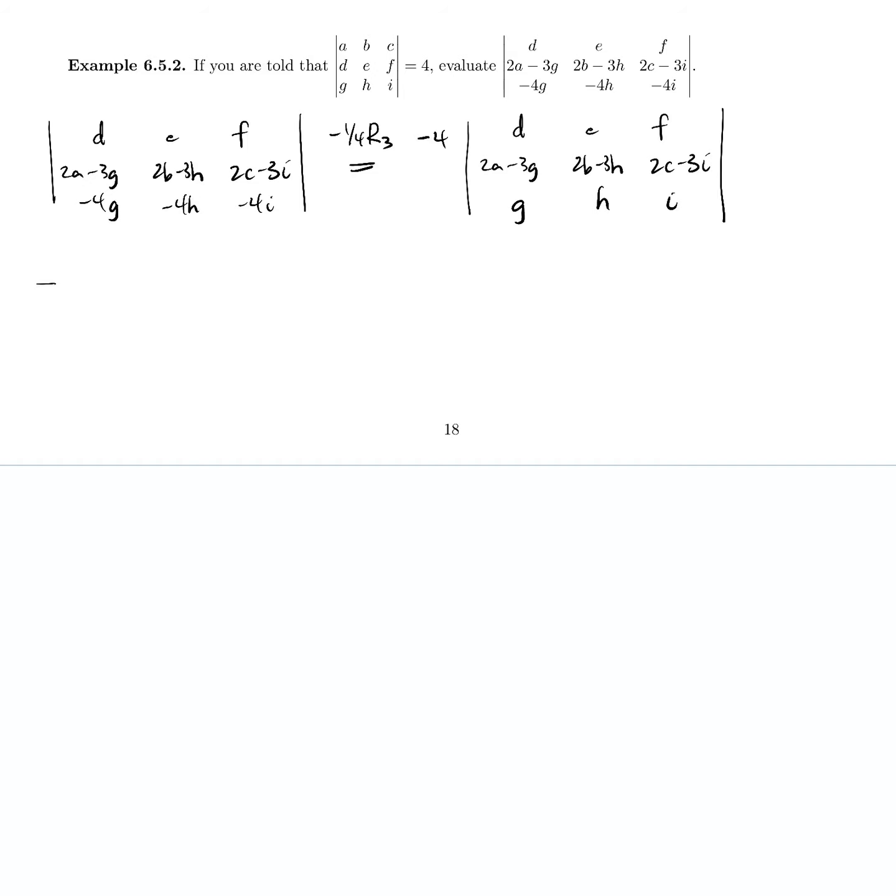So this will be equal to, so the row operation is row 2 plus 3 row 3, and we remember indeed that operation did not change the determinant, so I have no extra fix. I can just tag along this minus 4 times DEF 2A. So if I do minus 3G plus 3G, those are all going to cancel out. So I'm just going to get here 2A, 2B, and 2C GHI.